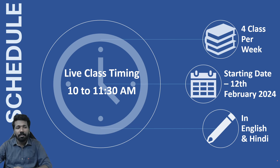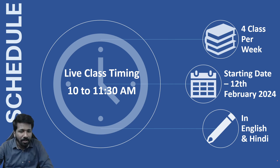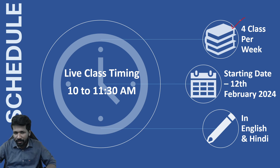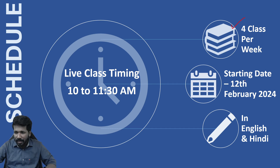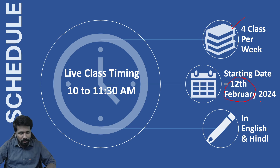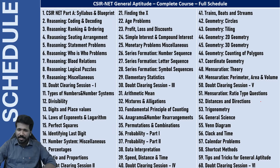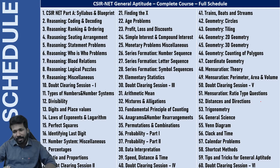Regarding the timing and schedule: live class timing will be 10:00 to 11:30 AM, with four classes every week. In case you cannot attend the live classes, recordings will be available. Classes are starting from 12th February onwards, and the language will be English and Hindi so that all students can understand the concepts clearly. The full schedule covers 60 lectures — 50 topic-wise lectures and six doubt-clearing sessions.